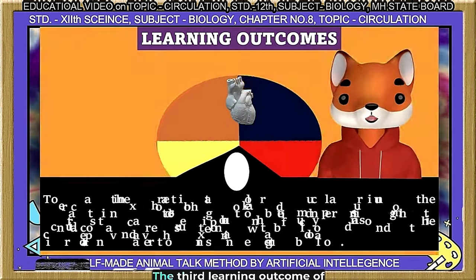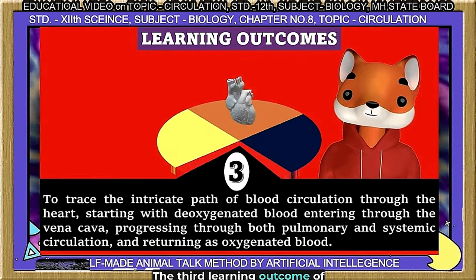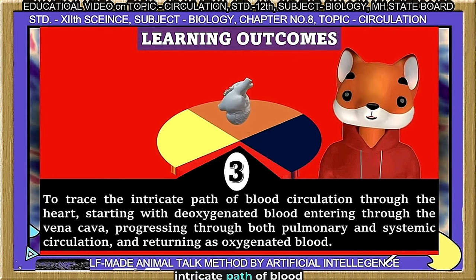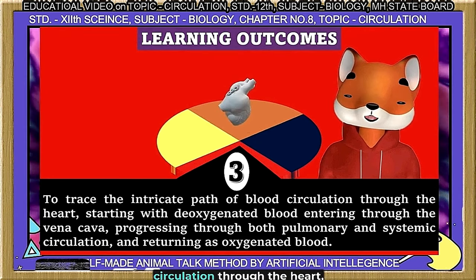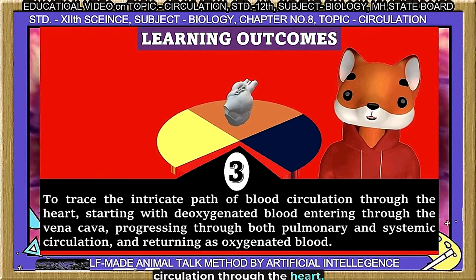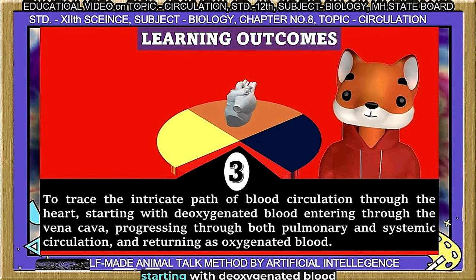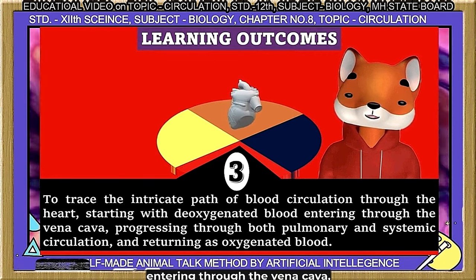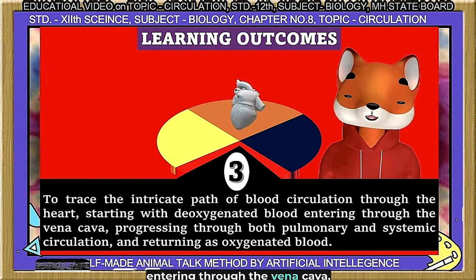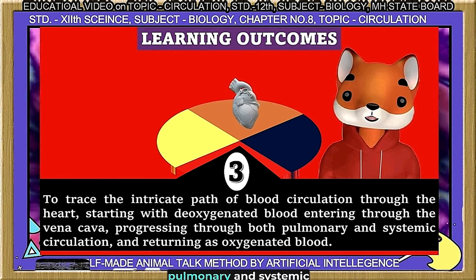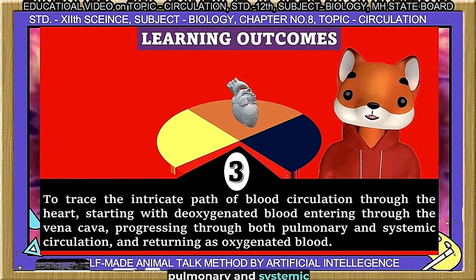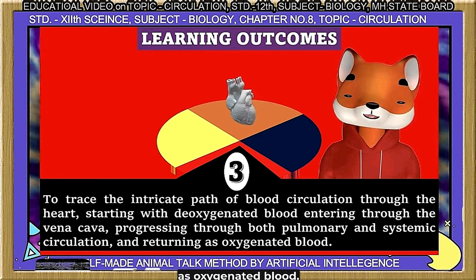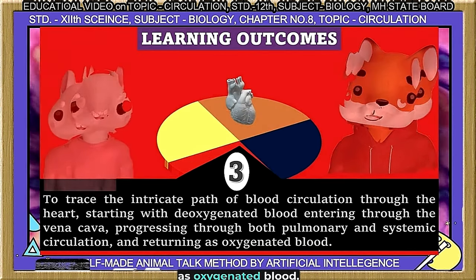The third learning outcome is to trace the intricate path of blood circulation through the heart, starting with deoxygenated blood entering through the vena cava, progressing through both pulmonary and systemic circulation, and returning as oxygenated blood.